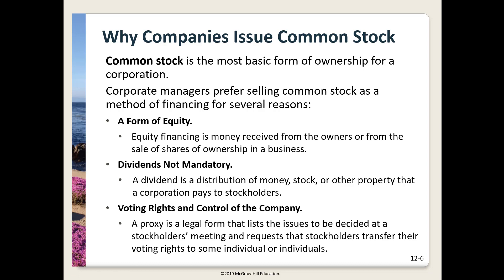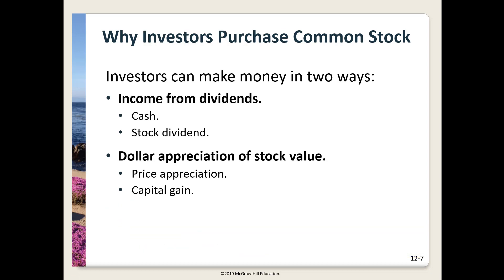As investors we view stock as an investment we expect to make money on. Companies issuing stock do so to finance operations, selling a share in the business in return for voting rights and potentially dividends. Thinking back to accounting, net income on the income statement can only be used in two ways: paid out as dividends or added to retained earnings on the balance sheet. As a shareholder, you don't have to attend the annual meeting to vote — nowadays it's done online via proxy vote.